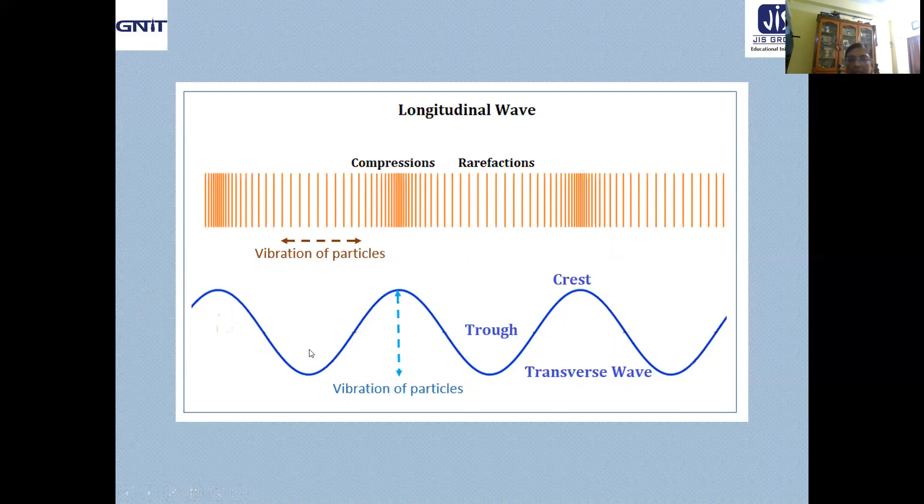What about the transverse wave? This is the pictorial representation of a transverse wave, which is made up of alternating crest and trough. That means, vibrations of the particle are perpendicular to direction of propagation of the wave. Because of these vibrations, we are getting the maximum point, position of maximum vibration, that is called the crest, and position of minimum vibration, that is called the trough. Here direction of vibration is perpendicular to direction of propagation of the wave.